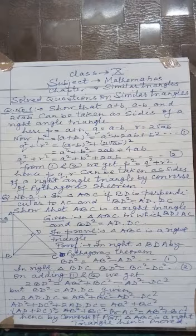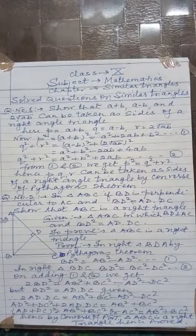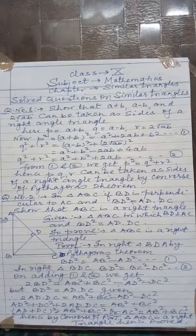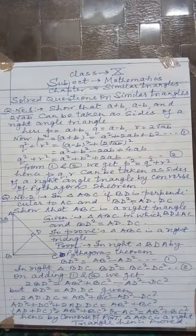So the equation reduces to 2·AD·DC = AB² + BC² - AD² - DC². Shifting AD² and DC² to the left-hand side, we get AD² + DC² + 2·AD·DC = AB² + BC². By algebraic formula, AD² + DC² + 2·AD·DC equals (AD + DC)². And from the figure, AD + DC = AC.